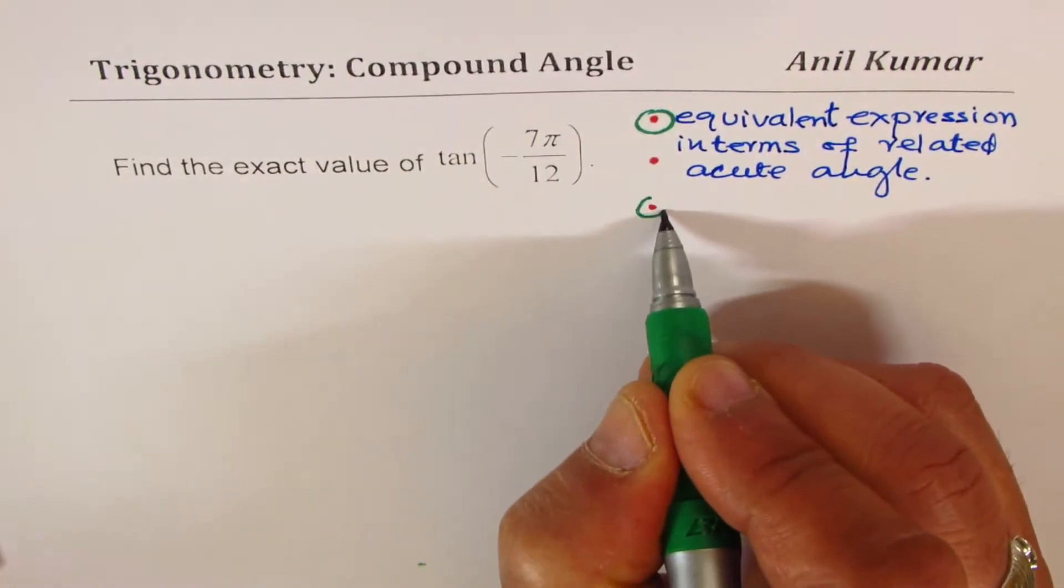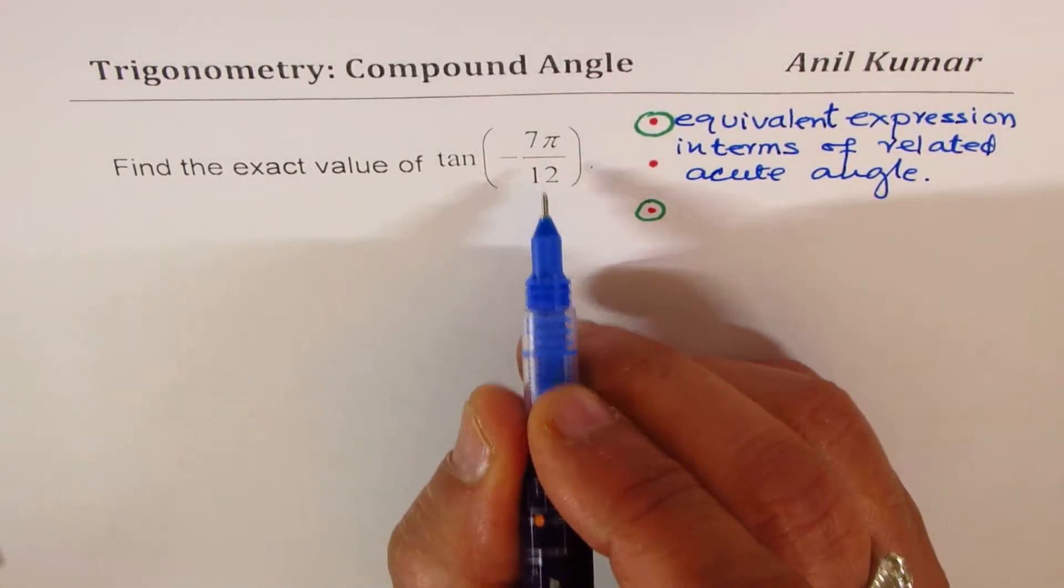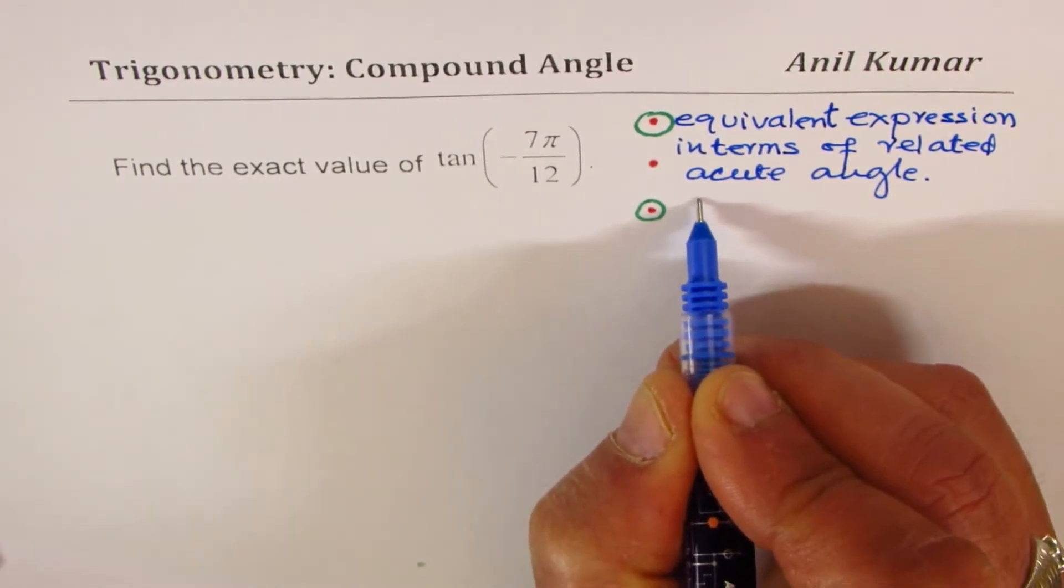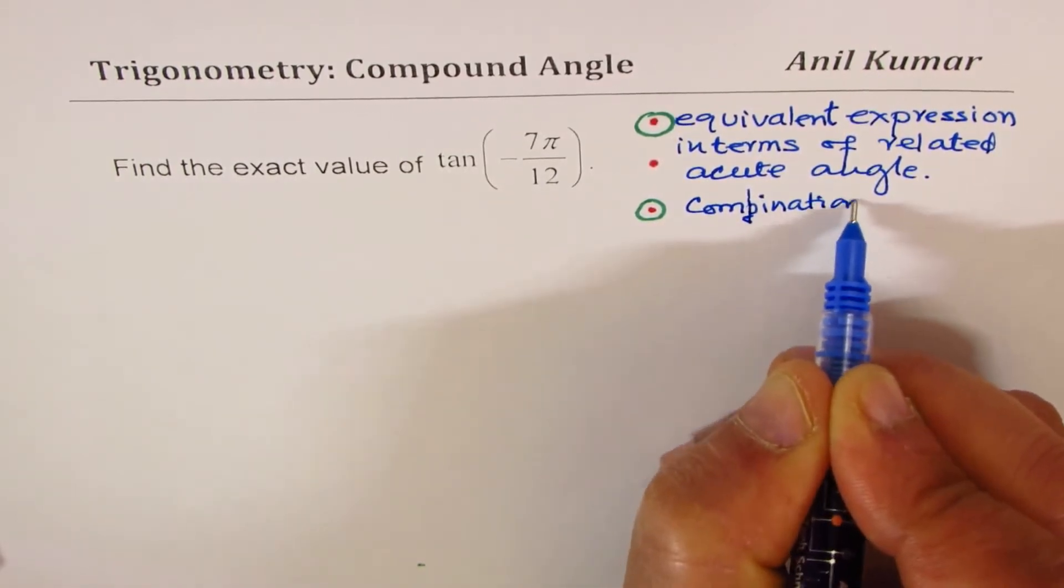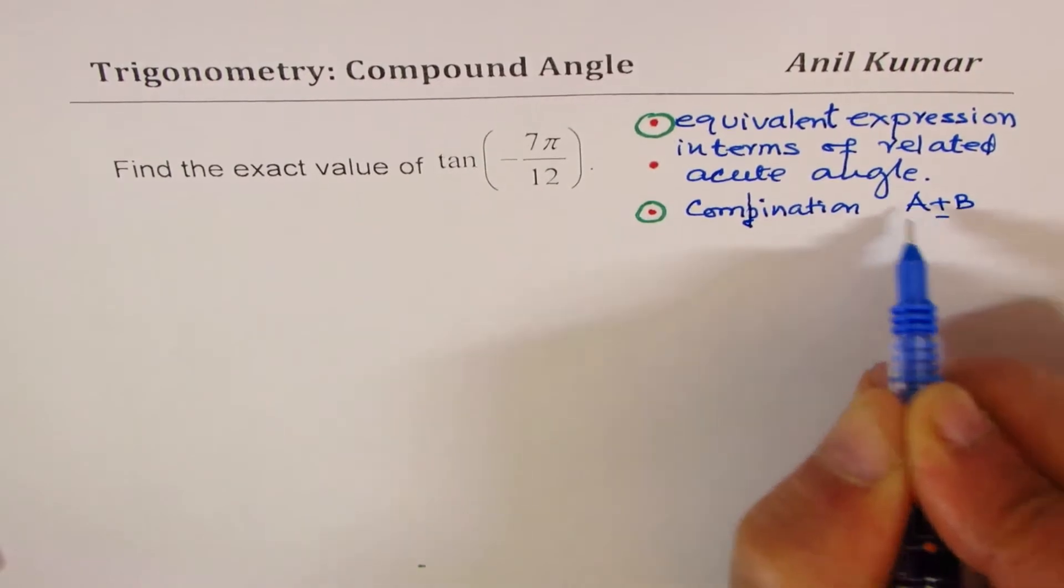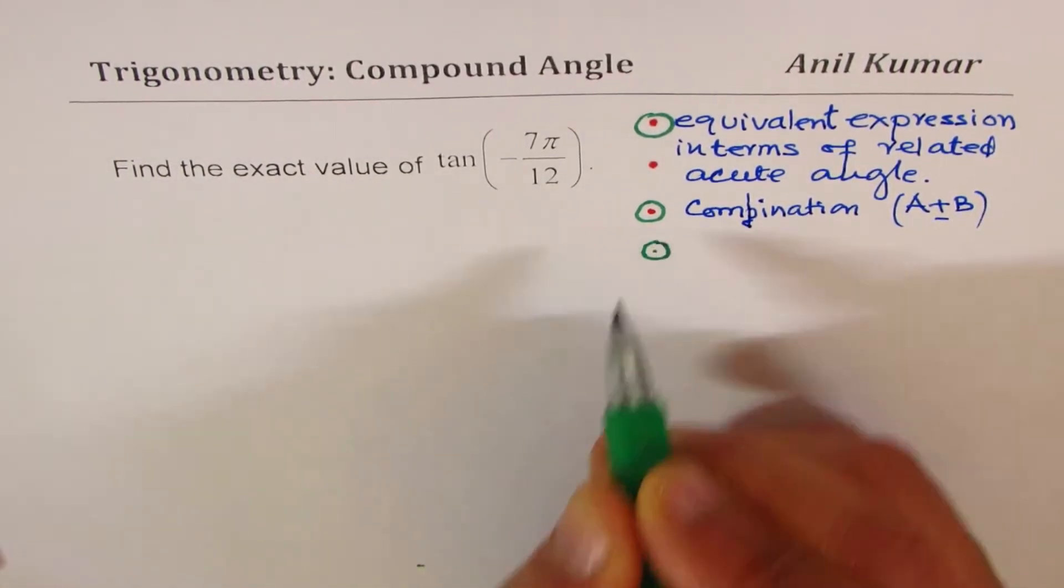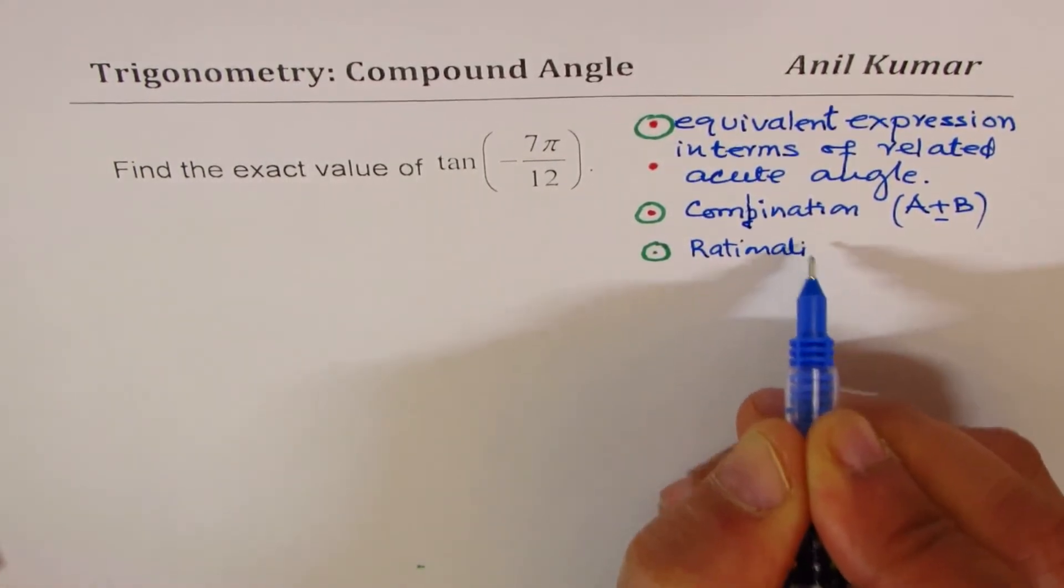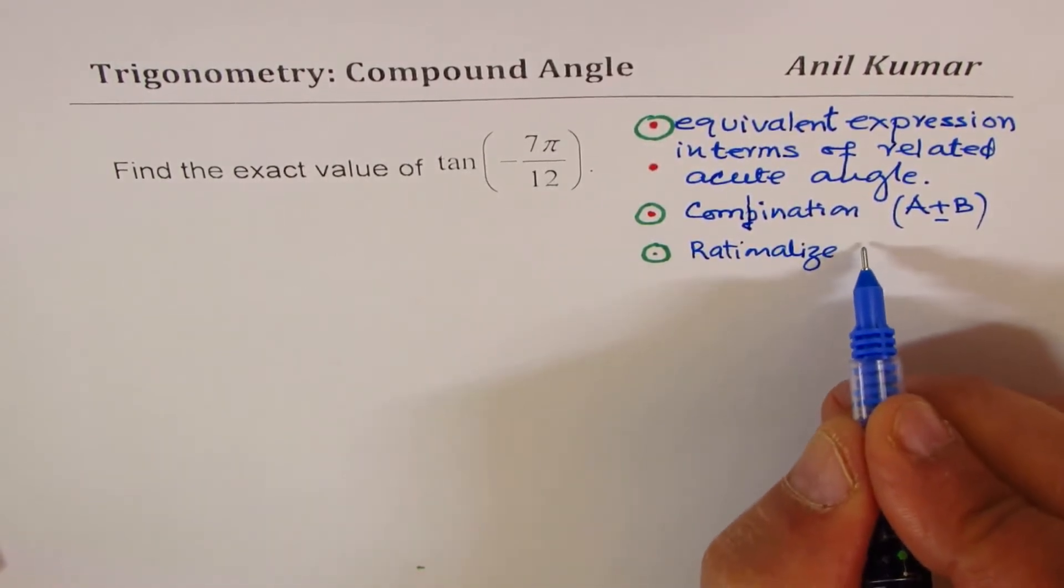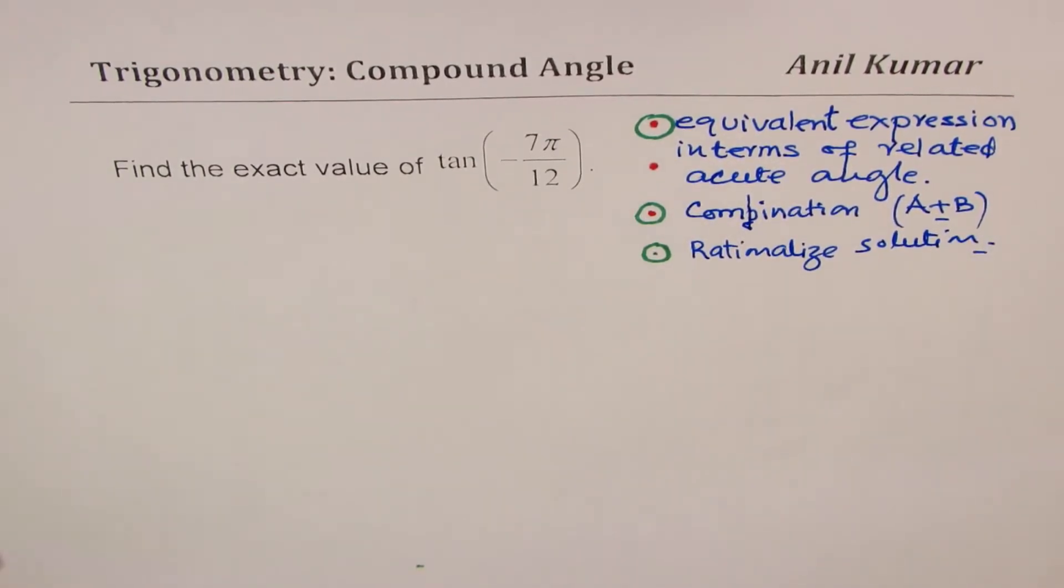Then we have to find combination to write this as A plus B or A minus B. And then the last thing we'll always look into is basically to rationalize solution.